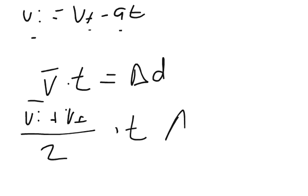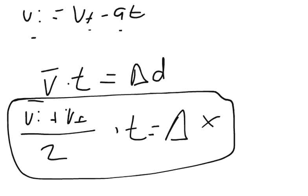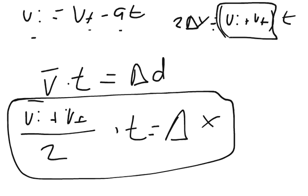If I multiply that times time, I get the change of x. Then I can solve this equation in terms of time. I can start by multiplying by 2, so I get 2 times the change of x equals the initial velocity plus the final velocity times time. Then I can divide by this term right here, and I would get time equals 2 times the change of x divided by the initial plus the final.